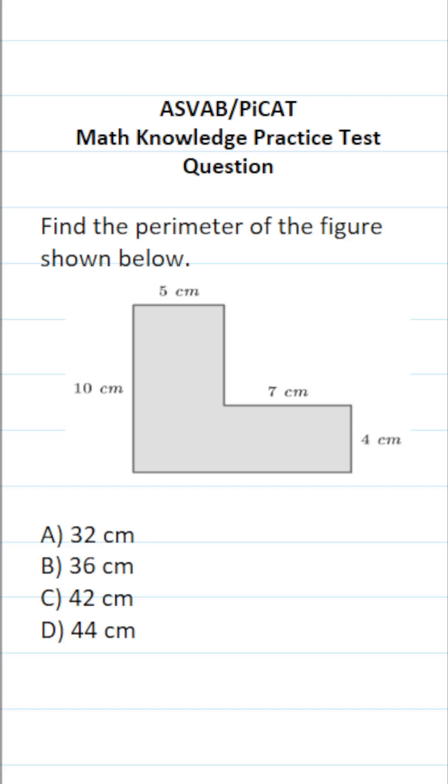How do you find the perimeter of any shape? You simply add up all of its sides. So to find the perimeter of this composite figure, we're going to add up all of its sides.